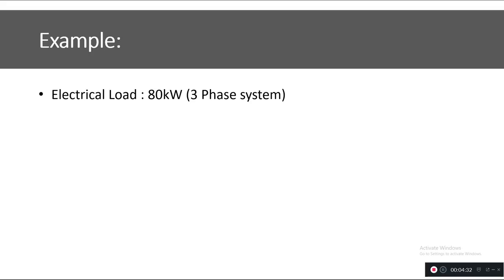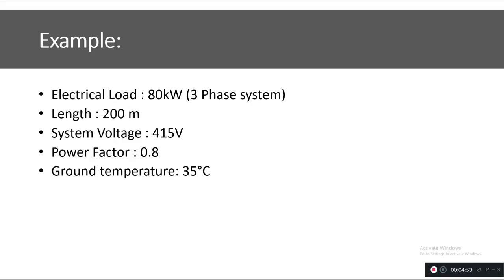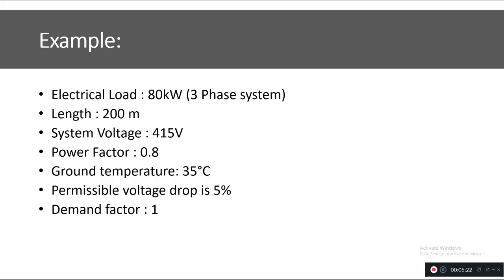We will consider an example with an electrical load of 80 kW on a three-phase system, a cable length of 200 meters, a system voltage of 415 V, and a power factor of 0.8. The ground temperature is 35°C, meaning we are laying the cable underground at a depth of 1 meter. The permissible voltage drop is 5%, the demand factor is 1, and the soil type is damp soil.